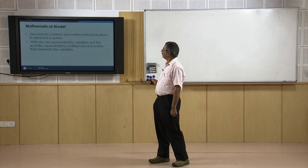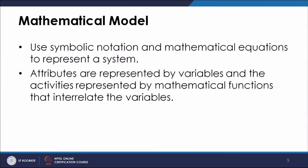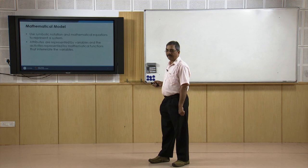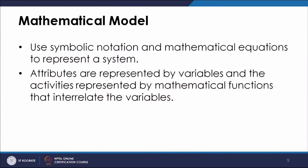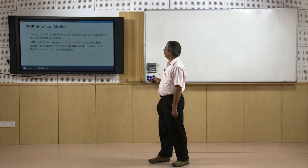Mathematical models use physical symbolic notations and mathematical equations or functions to represent systems. The expressions could be symbolic in nature or mathematical equations used to represent the system. Attributes are represented by variables, and activities are represented by mathematical functions that interrelate the variables.